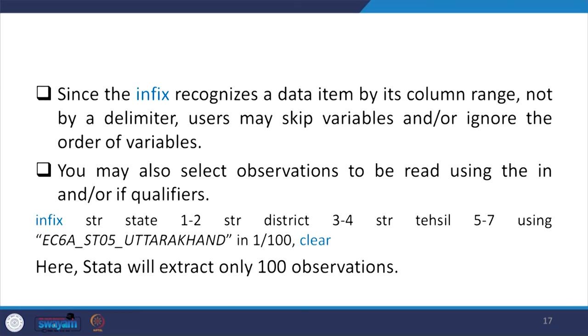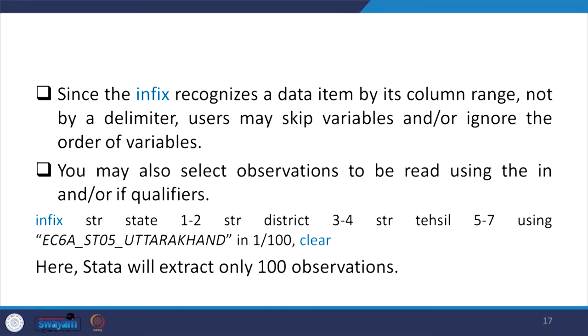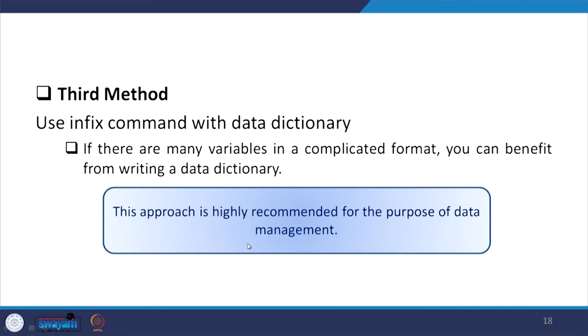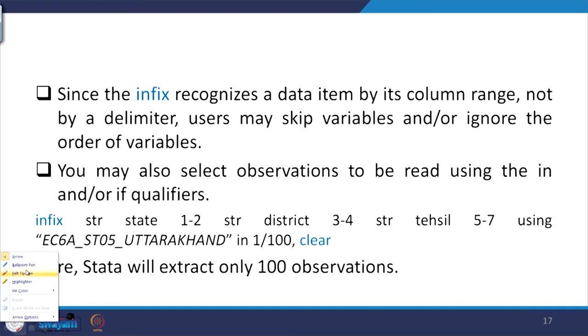You may also select observations to be read using the 'in' or 'if' qualifier. For example, if you want only the first 100 observations, you add 'in 1/100' to the infix command and it will automatically extract only those 100 rows. The rest of the syntax remains the same. You can do this on your own — if you have difficulties, please raise them.